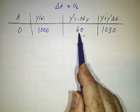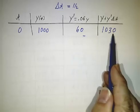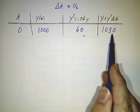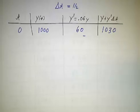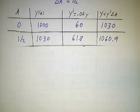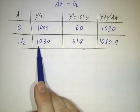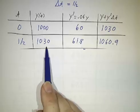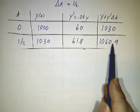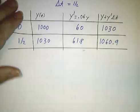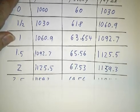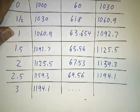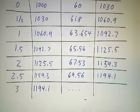If we're making money at $60 a year, after half a year, we'll have 30 extra dollars for a total of 1030. And then we recompute our rate of change half a year from now. 61.8, 1060.9. And I'm not going to walk through the whole calculation for you. You can work it out.